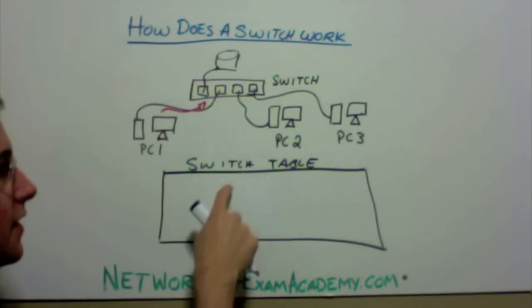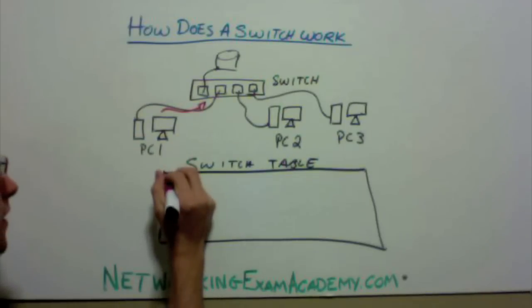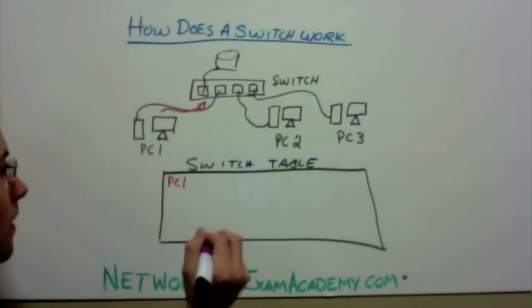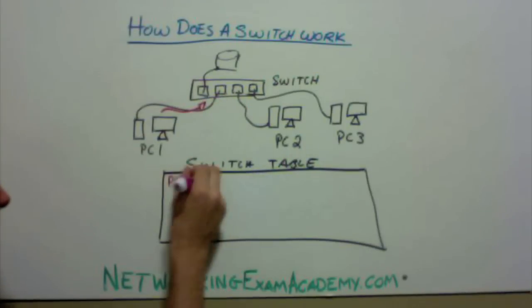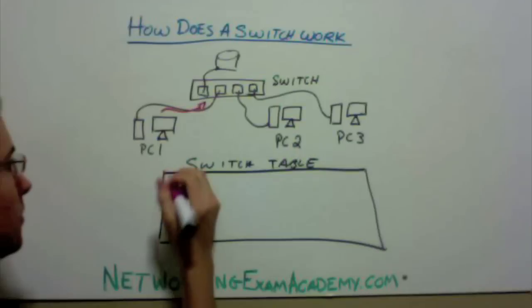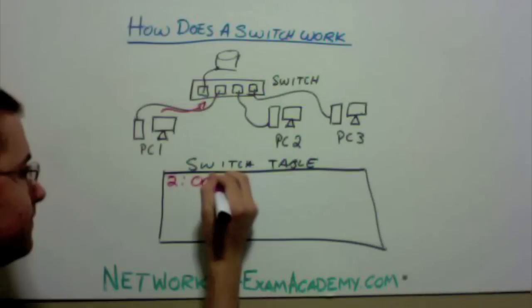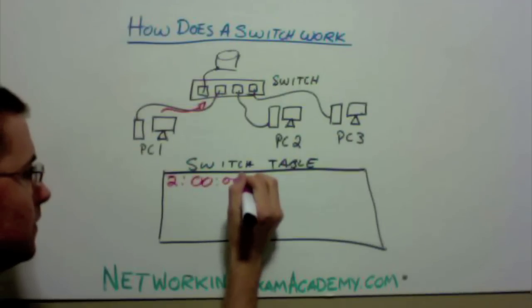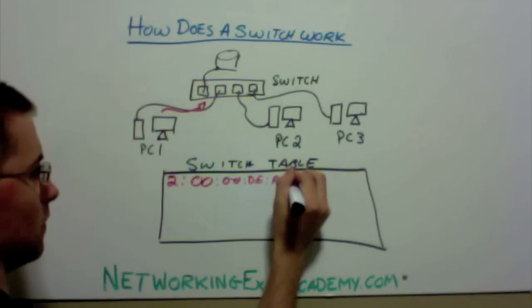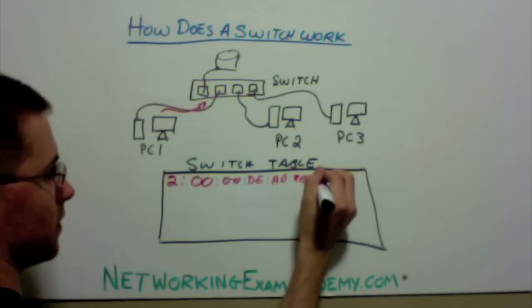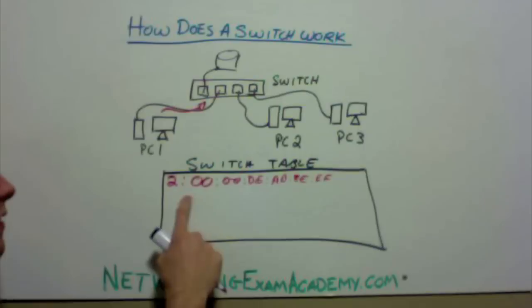The switch that has an empty table is going to make note that PC1, with its MAC address, is connected to switch port 2. So actually, this will be number 2, and it's going to put its MAC address. Just give it a MAC address. There. It says on this port 2, it has this MAC address.